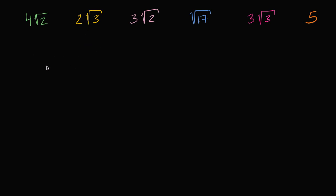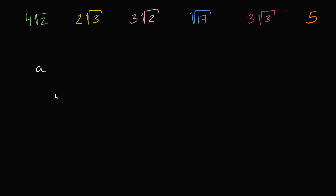We just have to realize: if I have some number a that is greater than zero, and a is less than b, then a squared is going to be less than b squared. If one positive number is less than another positive number, then the square of this positive number is less than the square of that number. So when comparing irrational numbers involving square roots of non-perfect squares, let's compare their squares, because their squares won't be irrational — it'll be much easier to compare and then order them, because ordering the squares tells us the order of their square roots.